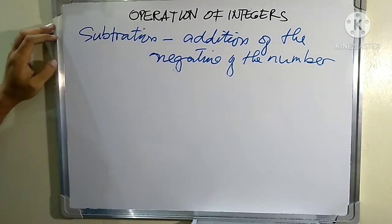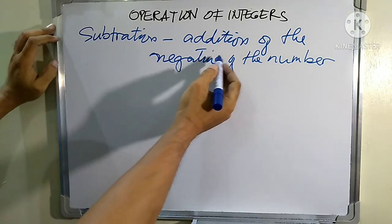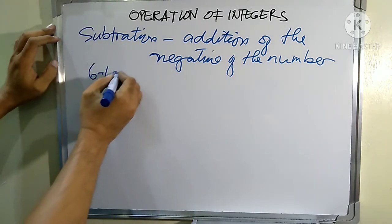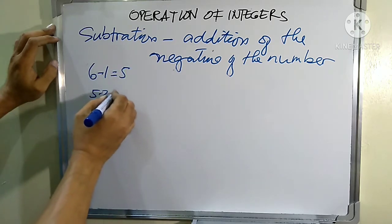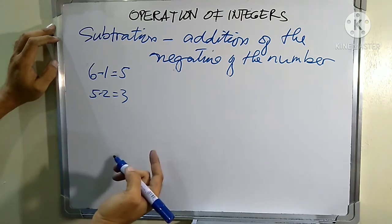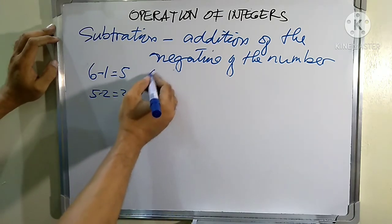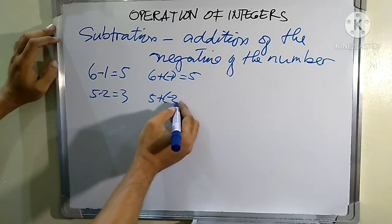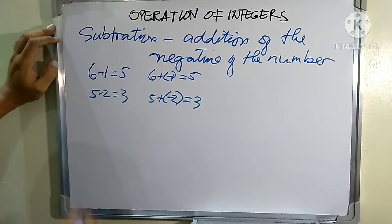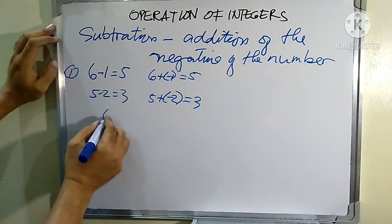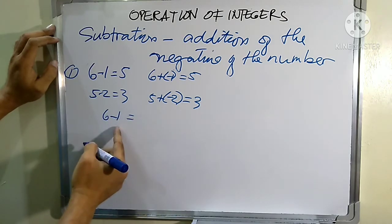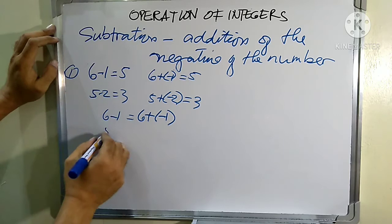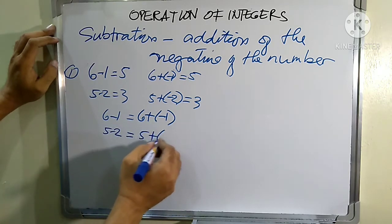We also have another definition of subtraction, which is defined as addition of the negative of the number. Earlier we had six minus one equals five, and five minus two equals three. In the addition of positive and negative numbers we have six plus negative one equals five, and five plus negative two equals three. So here, six minus one is equal to six plus negative one, and five minus two is equal to five plus negative two.